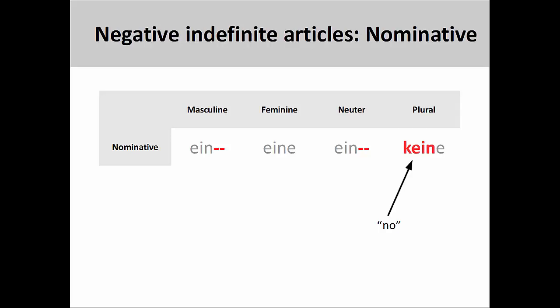I am using the negative indefinite article kein for plural nouns in this presentation, as we cannot say 'a trees,' but we can say 'no trees.'